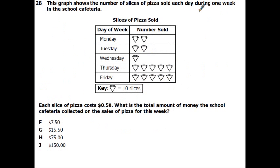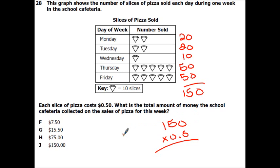Alright, the graph shows the number of slices of pizza sold each day during one week in the school cafeteria. Each slice costs 50 cents. What is the total amount of money the school cafeteria collect on sales of pizza for this week? So each one of these represents 10 slices. So on Monday we had 20, Tuesday we had 20, Wednesday 10, Thursday we had 50, and Friday we had 50. So all together we sold, let's see, 4, 5, 10, 150 slices. And if it costs 50 cents per slice, you're going 150 times 0.5. So that's going to be $75.